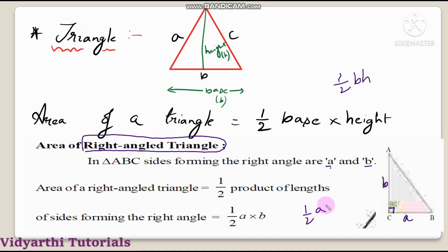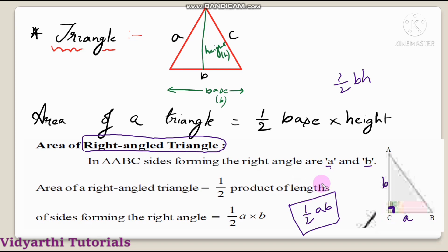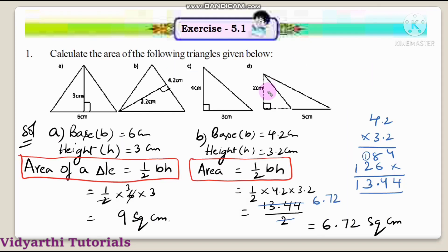So, area of the right angle triangle = ½ AB, where A and B are the two sides which form the right angle. These are the formulas which are very, very important — so memorize them, children. Now let us go into our exercise, that is Exercise 11.1.